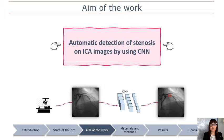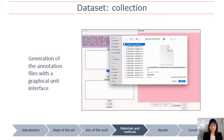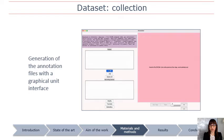Since this is a completely new research area, an important part of the work is focused on the organization of the dataset, considered to be the main obstacle in this detection task. The dataset was provided by the Cardiology Department of the Hospital Unit in Ancona, and it contains, together with the images, annotation files generated by an expert clinician through visual inspection. A graphical user interface was developed through which the clinician can generate a CSV file listing the depicted stenosis and their position in the image.